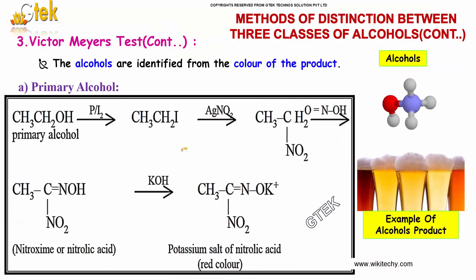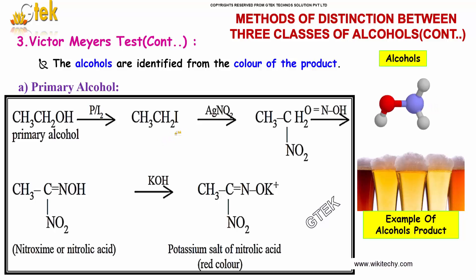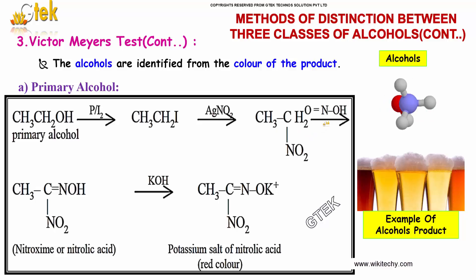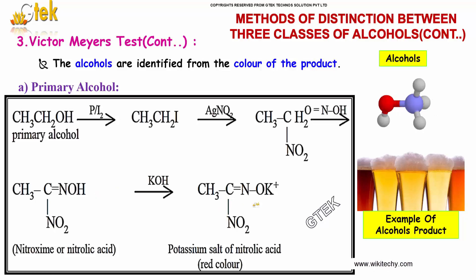The alcohols are identified from the color of the product formed. For example, taking a primary alcohol, on addition of iodine we obtain CH3CH2I. On addition of AgNO2 we obtain CH3CH2NO2. On addition of nitrous acid we obtain nitrolic acid. On further addition of potassium hydroxide we get the potassium salt of the nitrolic acid, and the product formed is of red color.